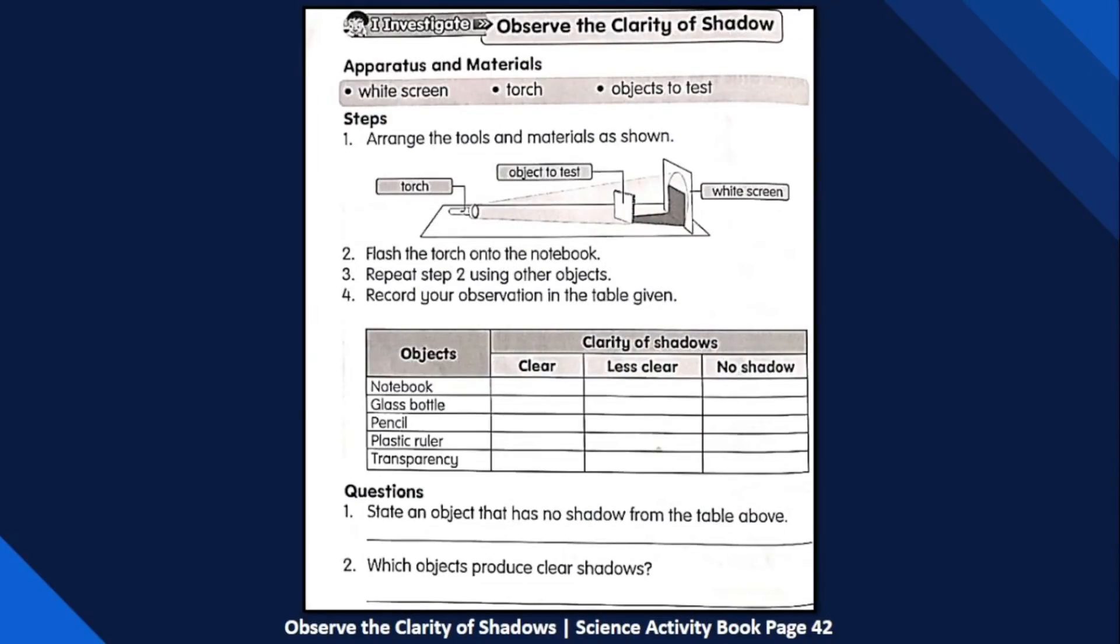For the investigation in your science activity book page 42, it is very much the same as the investigation we have done from your textbook. The materials are different, but I also demonstrated with these materials. The materials include notebook, glass bottle, pencil, plastic, and transparency. I replaced the glass bottle with a drinking glass, but it is very much the same material.